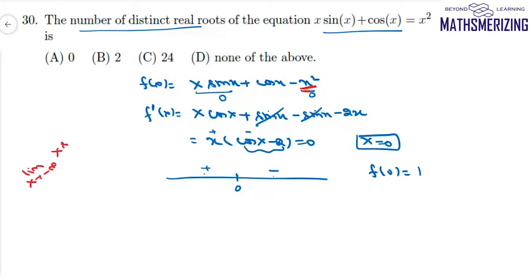As x approaches negative infinity, the -x² term dominates, so f(x) approaches negative infinity. Similarly, as x approaches positive infinity, f(x) approaches negative infinity.